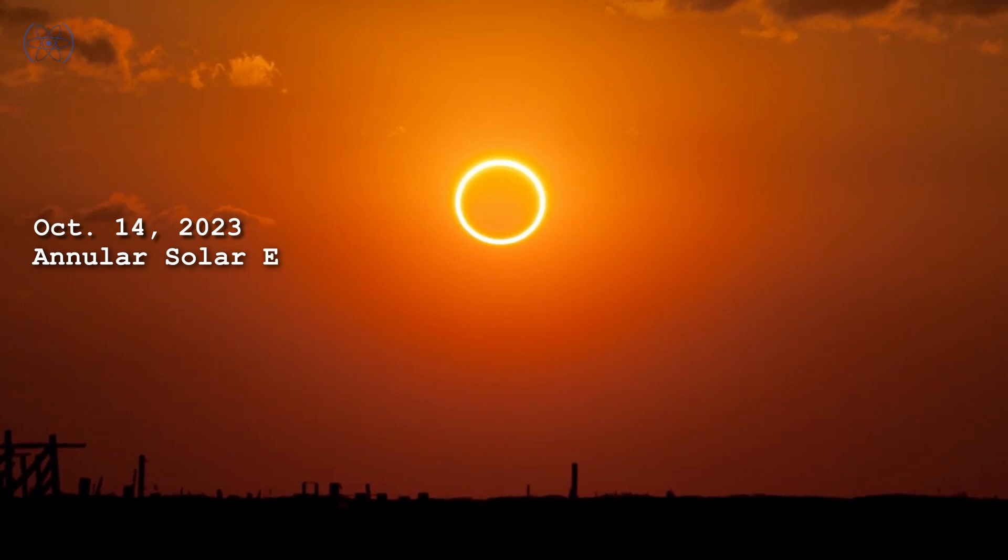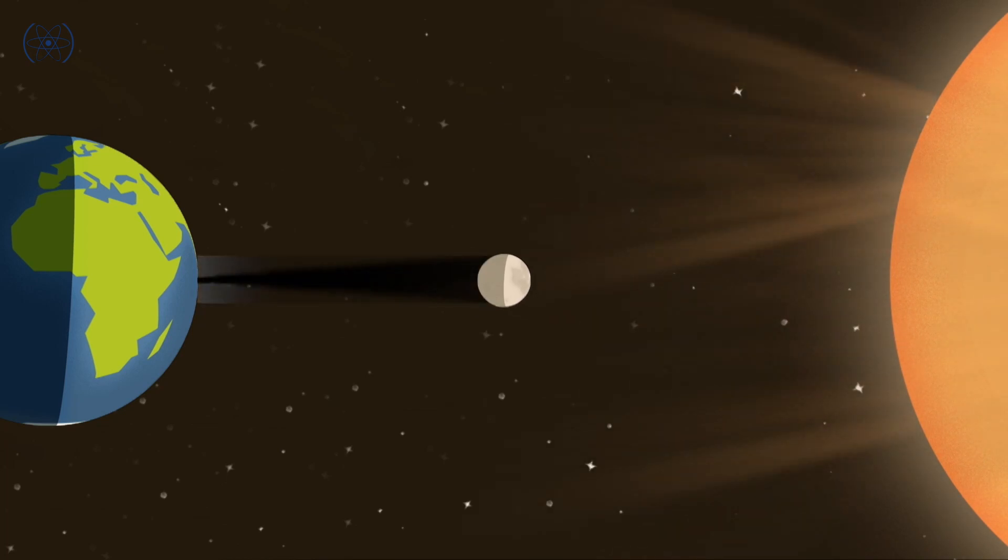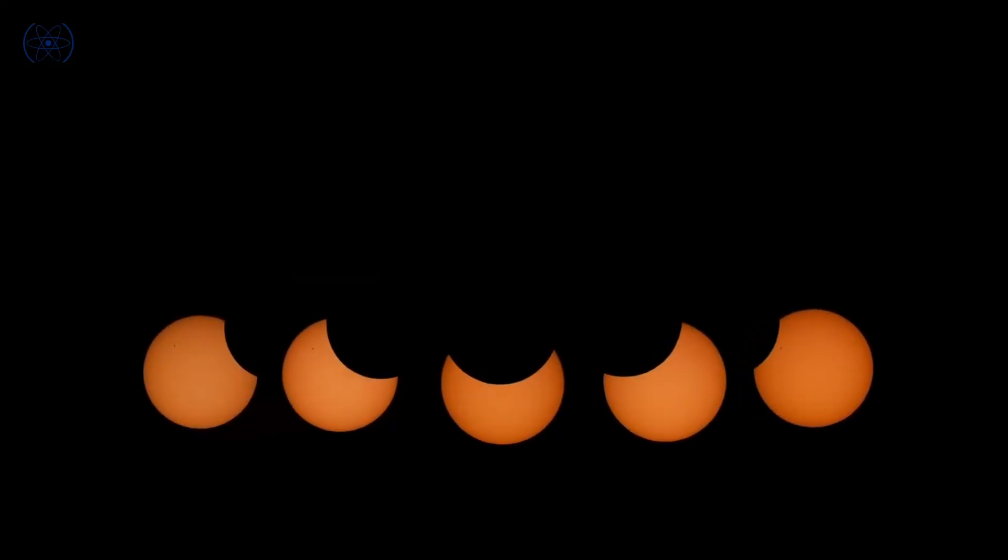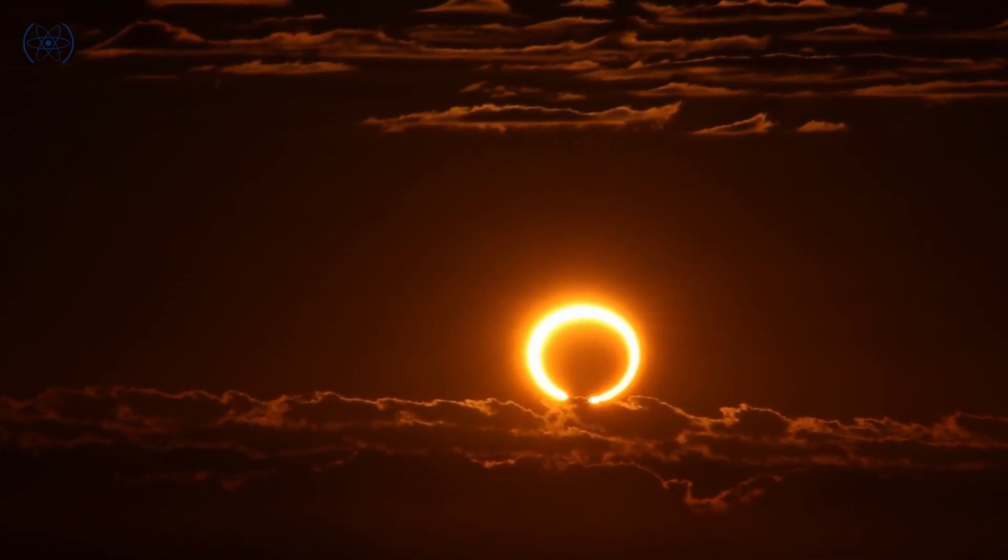An annular solar eclipse will occur on Saturday, October 14th. Solar eclipses happen only at the new moon phase, when the moon is between Earth and the Sun. Because the moon won't fully cover the Sun, it will result in a ring of light around the dark moon.